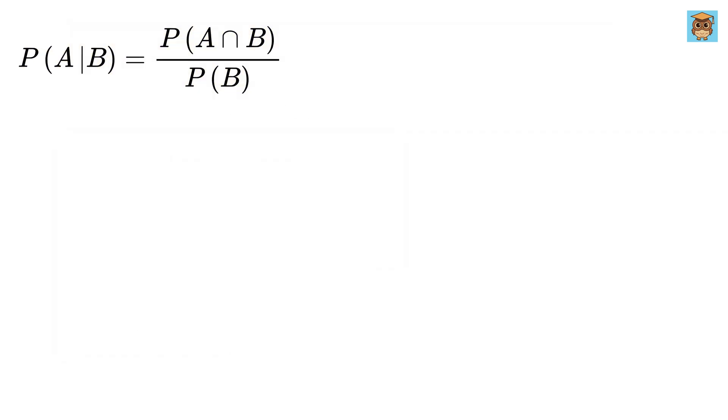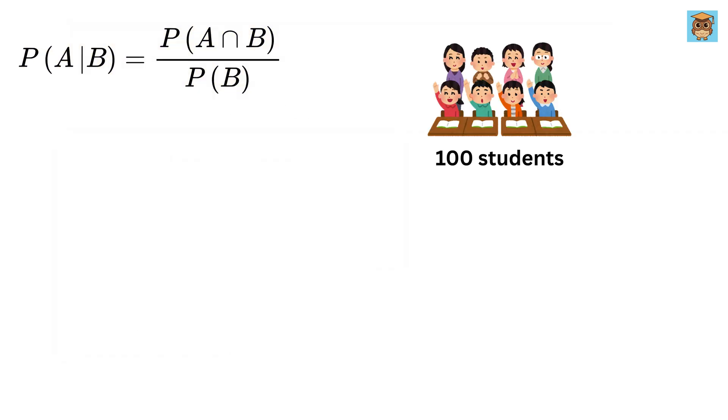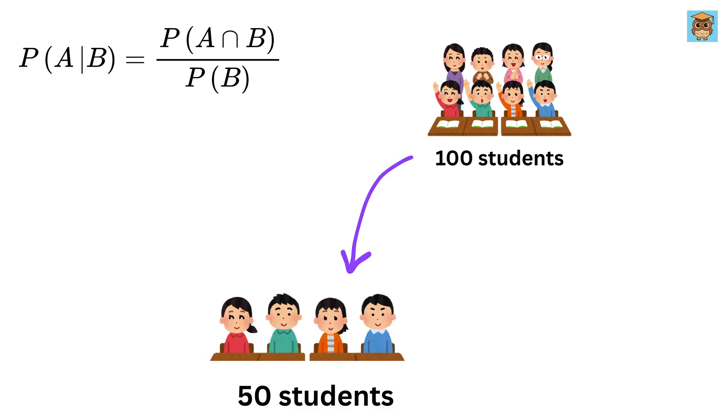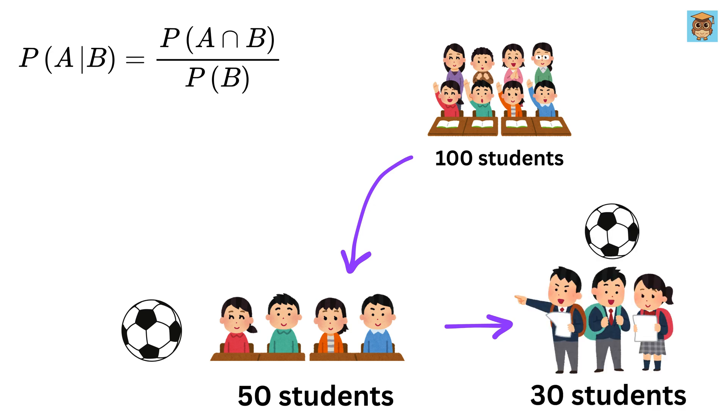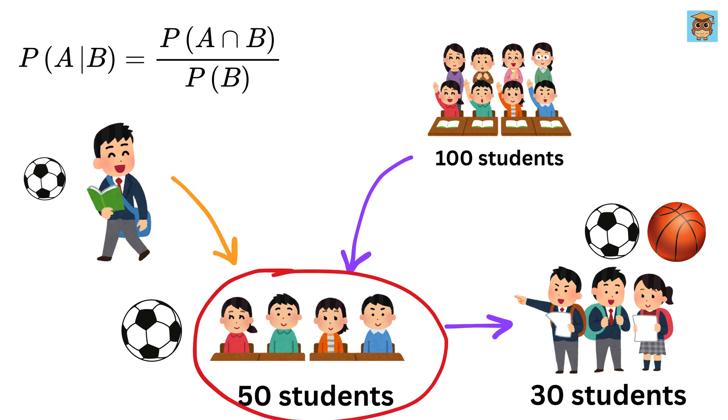Now let's look at a super simple example. Imagine there are 100 students in a school. Out of them, 50 students play football, and out of those 50, 30 also play basketball. So we know that 30 students play both football and basketball.